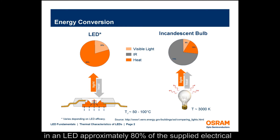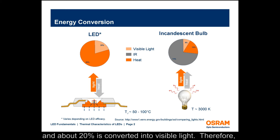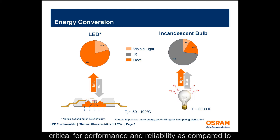In sharp contrast, in an LED, approximately 80% of the supplied electrical energy is dissipated through the LED package as heat, and about 20% is converted into visible light. Therefore, thermal management in LED devices is extremely critical for performance and reliability, as compared to conventional lighting sources.